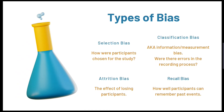Check that the researchers have clearly stated their inclusion and exclusion criteria and the reasons behind their decisions. The next type of bias is classification bias, which is also known as information or measurement bias. This relates to the recording of the exposure and outcomes for the study and whether any errors were made during this process.